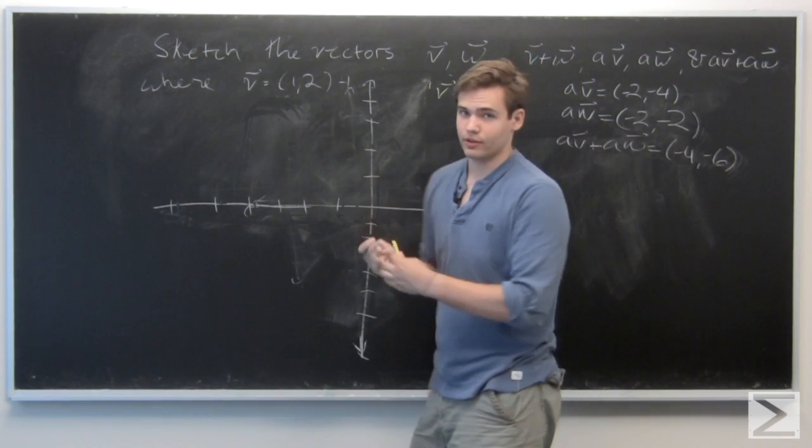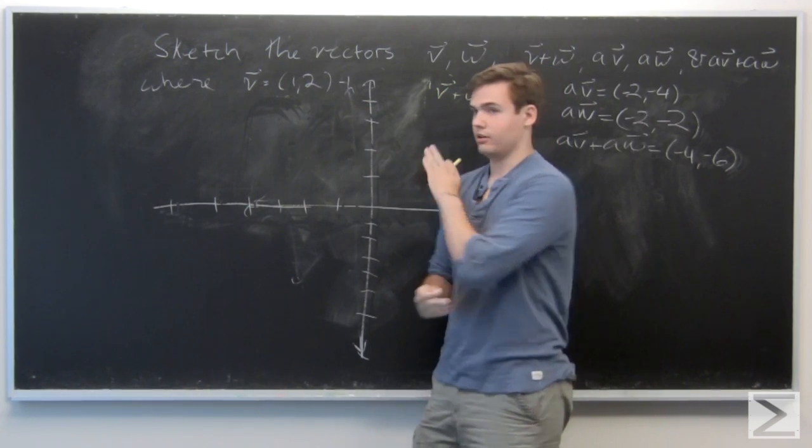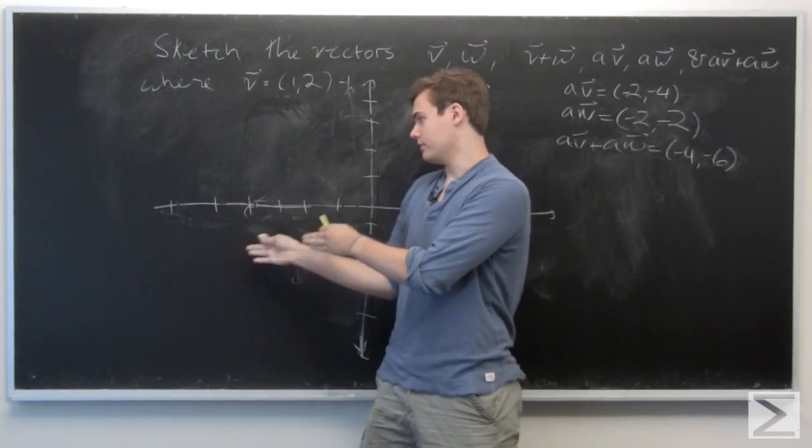OK, so since the other vectors v and w were all in the first quadrant, and a is a negative scalar, all of our answers now are going to be in the third quadrant.